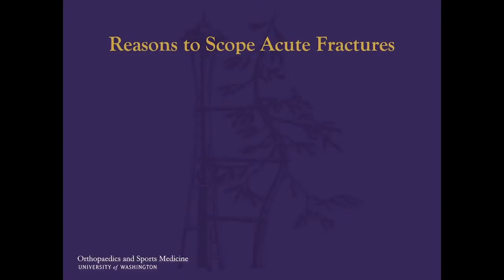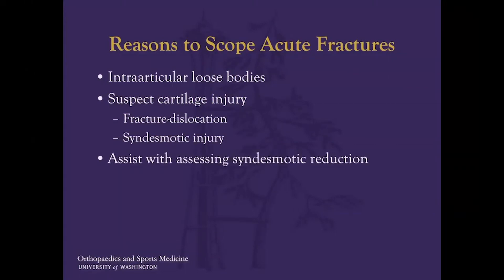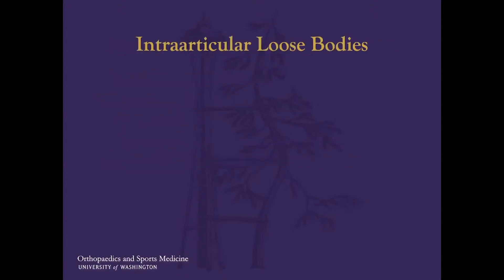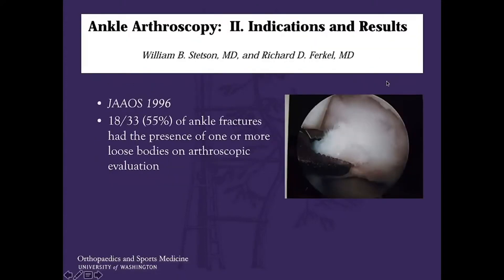After reviewing the literature and my training experience, I've come up with specific reasons for scoping ankle fractures in my practice: first, intra-articular loose bodies; second, suspected chondral injury — whether from a fracture dislocation or syndesmotic injury; and third, assessing syndesmotic reduction in fractures requiring syndesmosis fixation. Regarding loose bodies — these are small bony fragments within the joint, usually acute, which we worry about because they can cause locking, catching, and other mechanical symptoms, and can lead to accelerated articular wear. A 1996 Southern California study showed that 55% of ankle fractures scoped at the time of fixation had a loose body on arthroscopic evaluation.